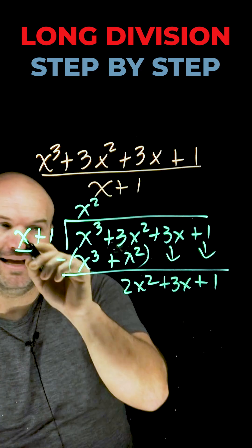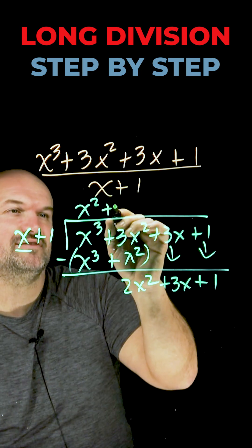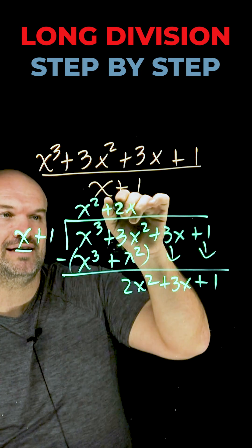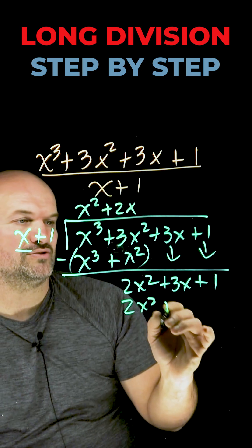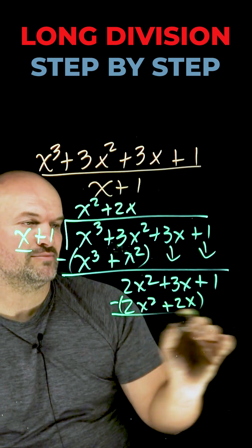Now let's do it again. x divides into 2x squared. That is going to be a positive 2x. Now again, take 2x multiplied by x, 2x squared. 2x times 1 is going to be a positive 2x. Group them and subtract.